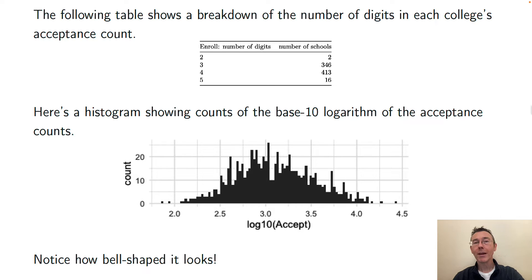Here's what the histogram of the base 10 logarithms of those acceptance counts look like. In this case I've decided to use a base 10 logarithm rather than a natural logarithm because it's a little bit more easy to interpret. So when I see 3.0, that's 10 to the third or 1,000, and when I see 4.0, that's 10 to the fourth or 10,000. So really what we're plotting here is sort of the scale of the variable, the overall size of the school. Here you can definitely see a bell shape.